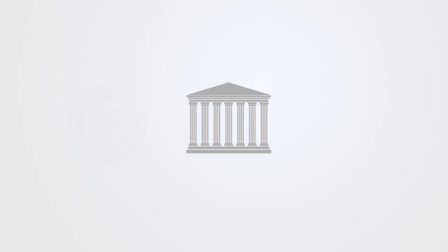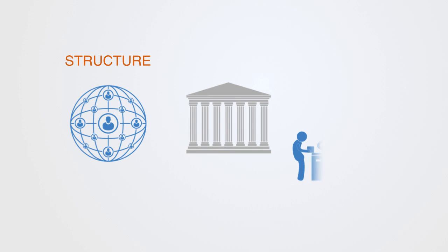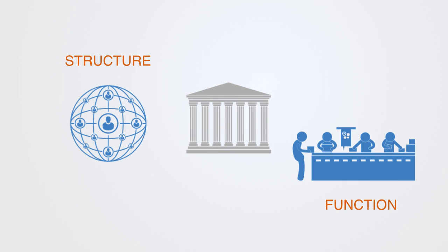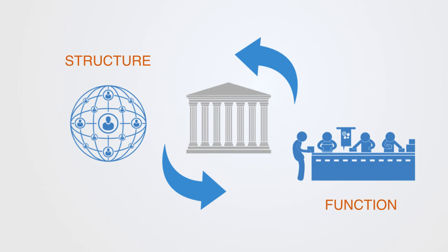Of course, in reality, almost all social institutions are a combination of these two. They are both structure and function, both cooperation and conflict, static and dynamic. But by looking at these two extremes, we can better understand the key drivers that make up the complexity of a social institution.